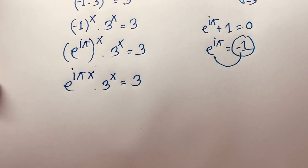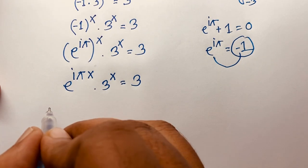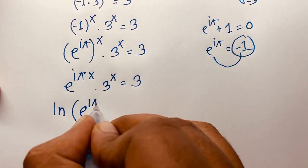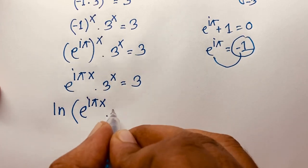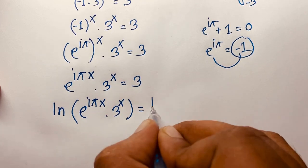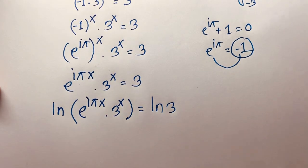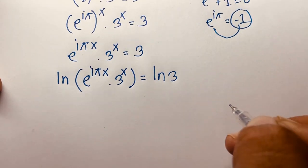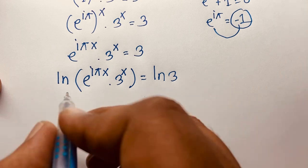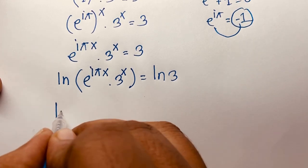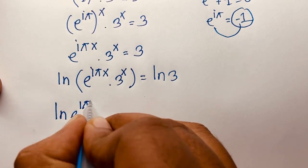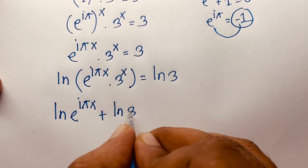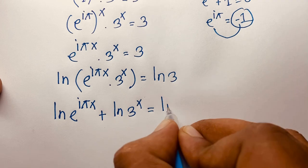Now I apply ln to both sides: ln of (e to the power of iπx times 3 to the power of x) is equal to ln 3. Using the log product rule — ln(ab) equals ln a plus ln b — this expression becomes ln(e to the power of iπx) plus ln(3 to the power of x) is equal to ln 3.